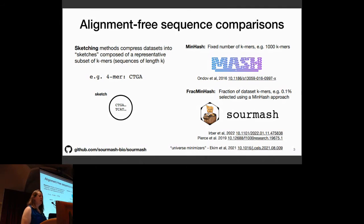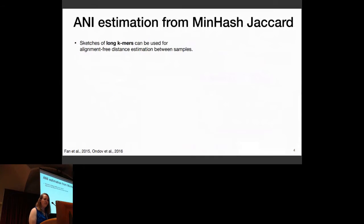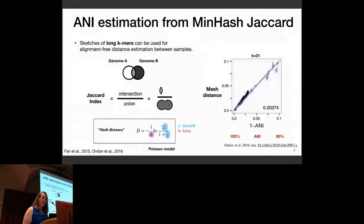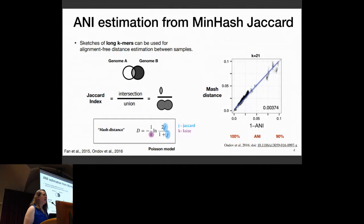We've published this in SourMash, but it's also been introduced as universe minimizers recently. Long DNA K-mers can be used for alignment-free distance estimation between samples. If you have two sketches of genome A and genome B, the Jaccard index is the intersection over the union of those K-mers. As was published in 2015–2016, you can transform that Jaccard index into something that is linearly related to ANI, particularly within the high similarity range for minhash.